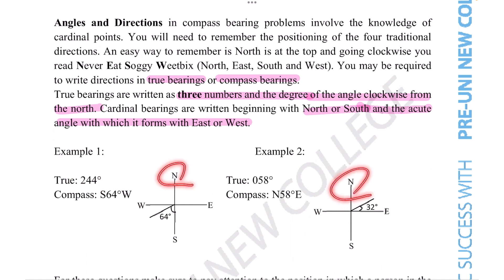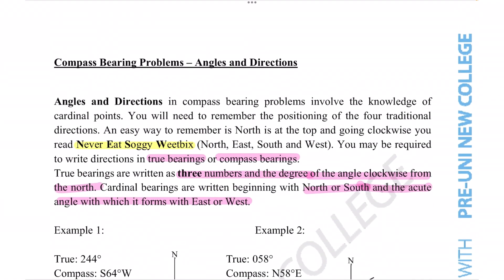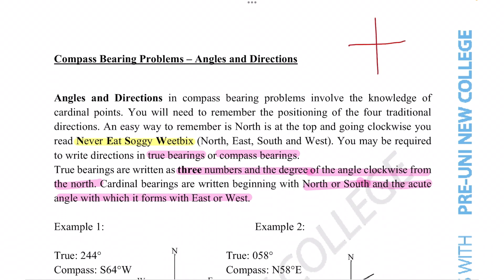Compass bearing knowledge comes from the fact that the compass needle will always point towards north. That is why a lot of these calculations or the way angles are expressed are always relative to where north is. The description has told us a very handy hint of remembering which directions north, east, south, west are in, and that is the rule Never Eat Soggy Weetbix. The first letters of this fun sentence match up with the first letters of north, east, south, and west.